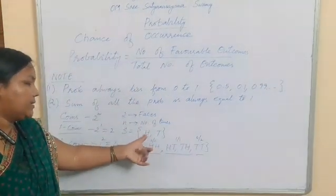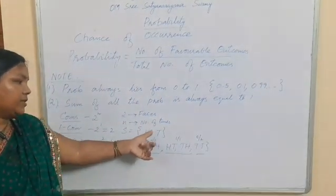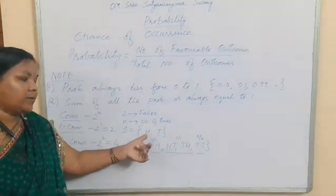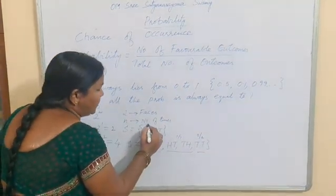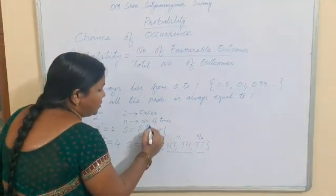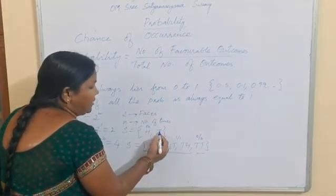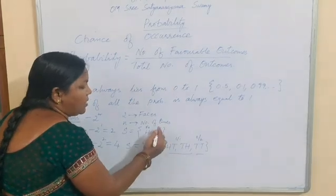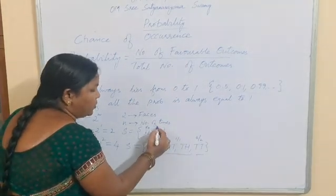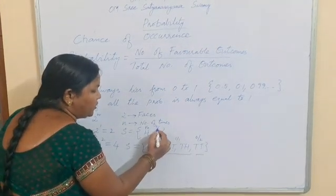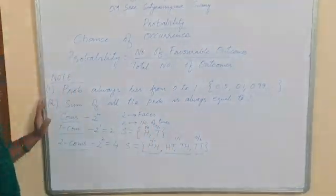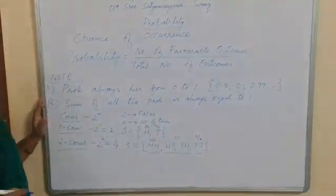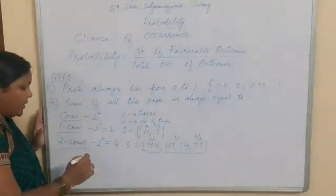In the same way, for a single coin toss, the first outcome can be written as 1 head and 0 tails, and the second outcome is 0 heads and 1 tail. We can write further outcomes in the same way.